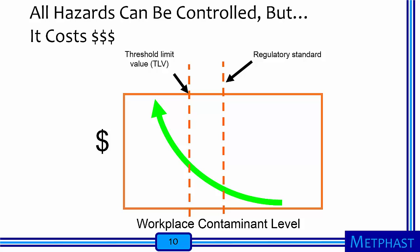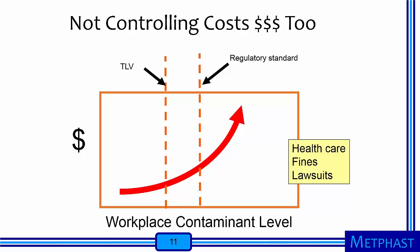All hazards can be controlled, but the installation and operation of a ventilation system is a substantial expense for a company. Workplace contaminant levels can be reduced further and further, well below regulatory standards and the threshold limit values. However, increasing effectiveness usually comes with higher costs and systems that are more complex and difficult to implement. Not controlling exposures also costs money in the form of increased health care costs, potential fines, and potential lawsuits. A critical task of the industrial hygienist is to understand and accurately present the costs associated with installing and operating a ventilation system versus the costs associated with not doing so.